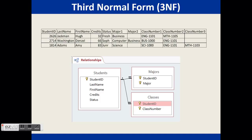The table can be broken down further. For example, in a table called student, we have fields named student ID, last name, and first name — and we know last name and first name are directly related to student ID. Then we have credits and status. Credits and status are related to each other: the number of credit hours determines one's status as a part-time or full-time student.